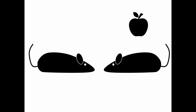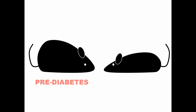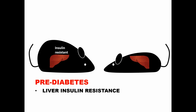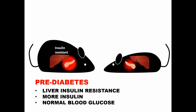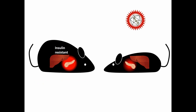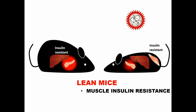We fed mice a normal healthy diet or a diet containing high levels of animal fat. The latter diet makes animals obese and also generates a state of prediabetes. This means that they get liver insulin resistance and compensatory hyperinsulinemia, but still have mostly normal blood glucose levels. We next infected lean mice with the virus. What we observed was very similar to what we saw in humans: animals develop muscle insulin resistance, leading to compensatory hyperinsulinemia, while blood glucose levels in these animals were still normal.